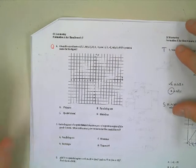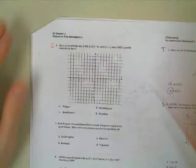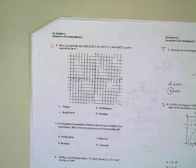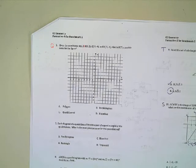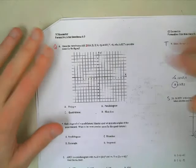Number six says: given the coordinates A(0,2), B(4,2), C(-3,-4), and D(-7,-4) — what is not a possible name for the figure? So we want to identify what we cannot call that figure. What might be a good strategy to utilize here? Graph it. Exactly right — it's like they're almost telling you what to do by giving you the coordinates.